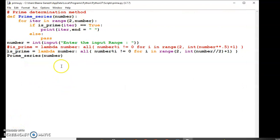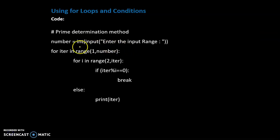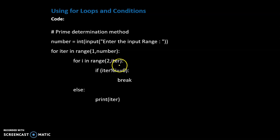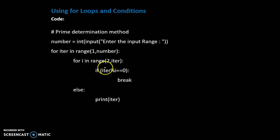We have to simplify this program. We need to read the range value and print from 1 to that value. We divide the number from 2 to half of that number. If it is equal to 0, then it is a break. We print the else part.